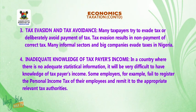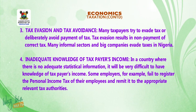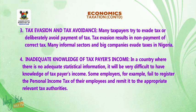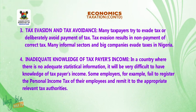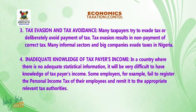Number 3: tax evasion and tax avoidance — many taxpayers try to evade tax or deliberately avoid payment of tax. Tax evasion results in non-payment of the correct tax; many informal sector operators and big companies evade taxes in Nigeria. Number 4: inadequate knowledge of taxpayers' income — in a country where there is no adequate statistical information, it will be very difficult to have knowledge of taxpayers' income. Some employers fail to register the personal income tax of their employees and remit it to the appropriate tax authorities.